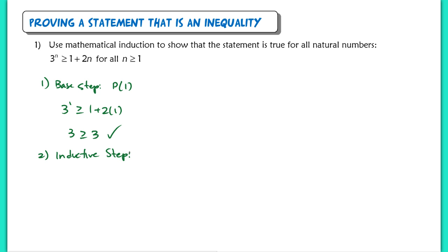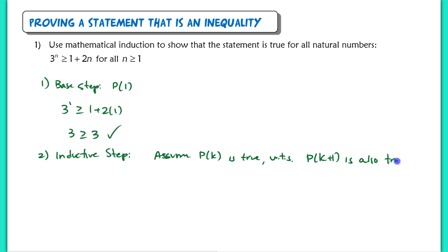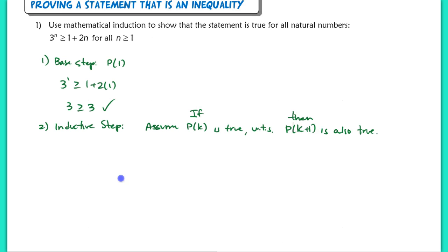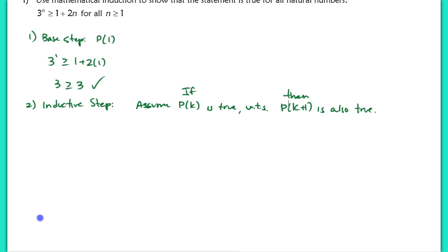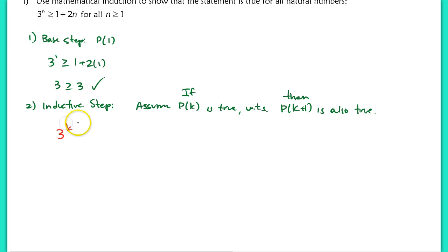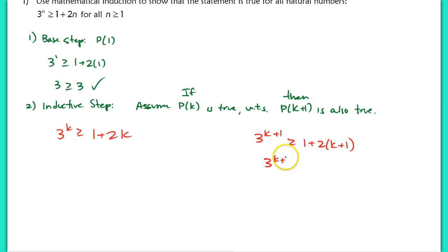In my inductive step, I want to assume that P(k) is true, and I want to show that P(k+1) is also true. This is like my if-then statement. To keep these separate but visible, I'm going to write my assumption P(k) as: 3 to the k is greater than or equal to 1 plus 2k. And I want to eventually manipulate that so that I get 3 to the k+1 is greater than or equal to 1 plus 2 times (k+1), which if I clean up is just 2k plus 3. So this is what I want to eventually arrive at.